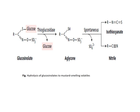Hydrolysis of glucosinolates produces mustard-smelling volatiles. If you have smelled mustard oil, you will notice a pungent smell that is due to glucosinolates. These compounds are not toxic in nature by themselves but are readily broken down to other compounds which are toxic. These slides show the breakdown or hydrolysis of glucosinolates.